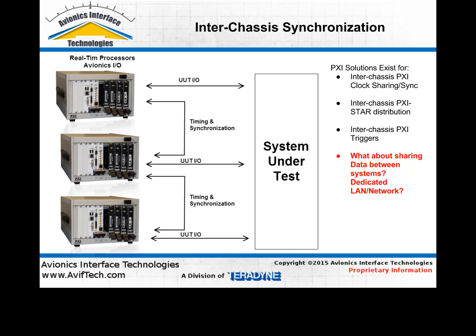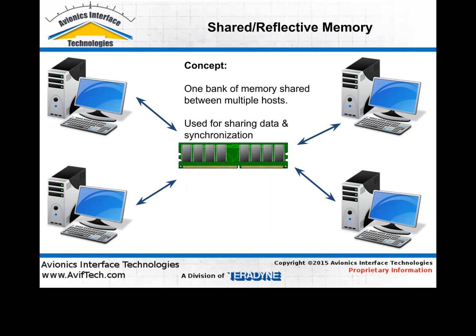That handles the clock, timing, and synchronization — but what about data? How do we share the data? We're talking about 70,000 parameters that, for each cycle of the simulation thread, we have to calculate, read, update, and write back out so they can go through the I/O modules into the system under test. That's where shared memory comes in.